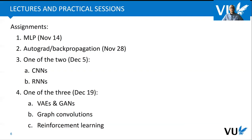In the fourth assignment, also in groups of three, you tackle one of the more challenging topics: either variational autoencoders and GANs, graph convolutions, or reinforcement learning. Again, you pick only one out of these three topics.